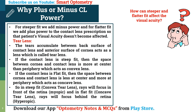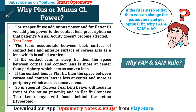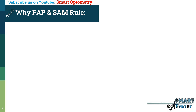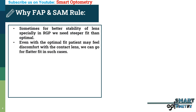Now another question arises: if the fit is steep or flat, then why not just change the parameters and get optimal fit? Sometimes, for better stability of contact lens — especially rigid gas permeable contact lens — we need a steeper fit than the optimal fit. Even with the optimal fit, a few patients may feel discomfort. So in such cases, we need FAP and SAM rules so that the patient's visual acuity doesn't become affected.